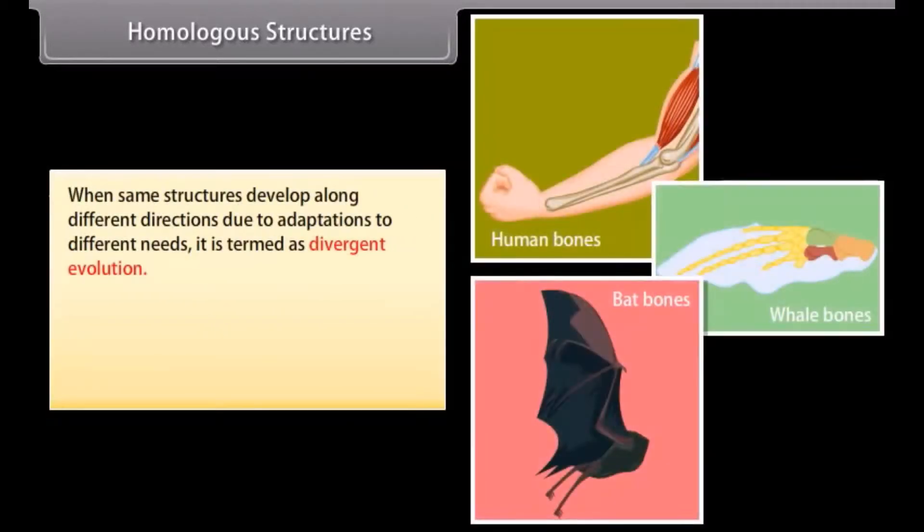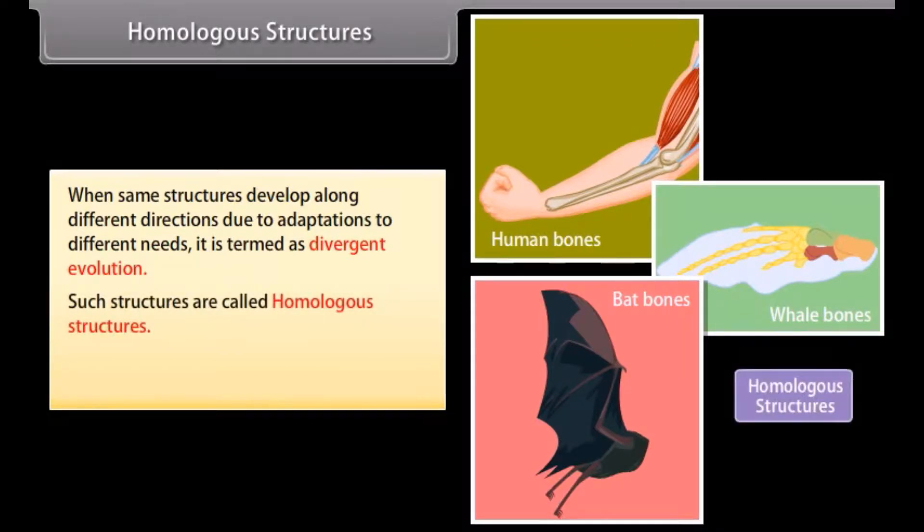Homologous structures. When same structures develop along different directions due to adaptations to different needs, it is termed as divergent evolution. Such structures are called homologous structures. Example: Bones or forelimbs of human beings, whales and bats are homologous.